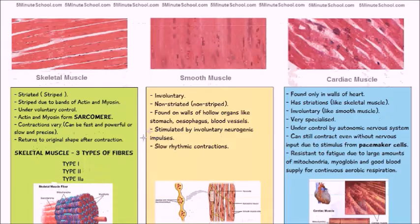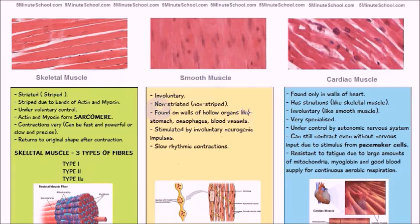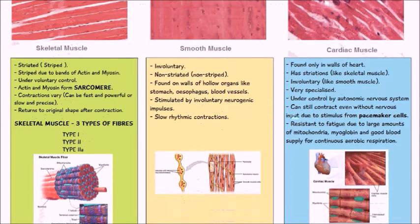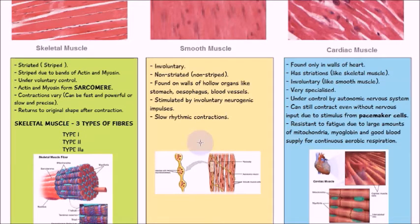Let's talk about smooth muscle now. Smooth muscle is involuntary and it's non-striated. You can see the difference between the two pictures here — we have skeletal muscle which has stripes, but there are no stripes in smooth muscle. It's found on the walls of hollow organs like the stomach, esophagus, and blood vessels, and it's stimulated by involuntary neurogenic impulses. The types of contractions in smooth muscle are slow rhythmic contractions, often just to help move whatever's in the hollow organ along the passage. In the case of the esophagus, the smooth muscle contracts to help the food pass down into the stomach.